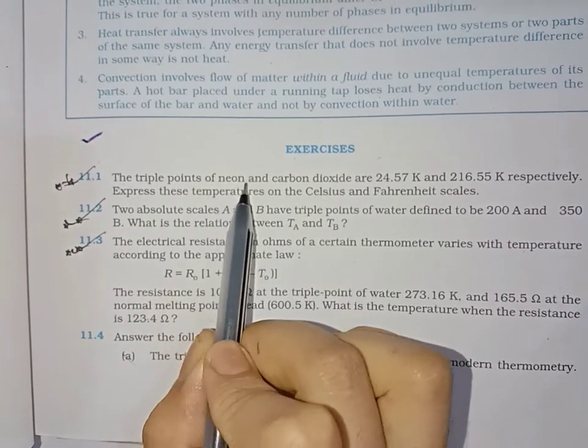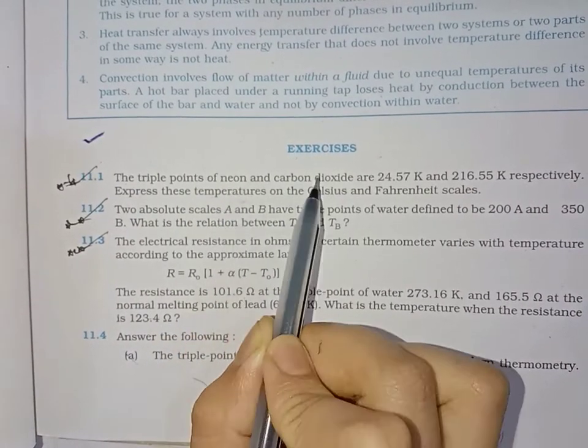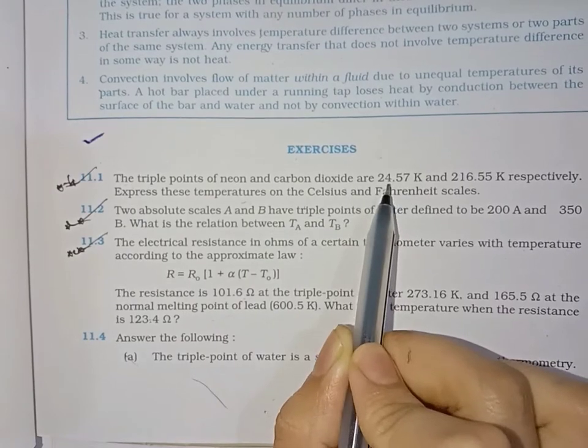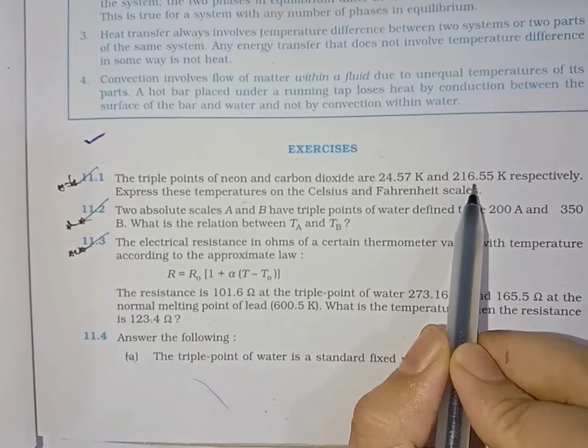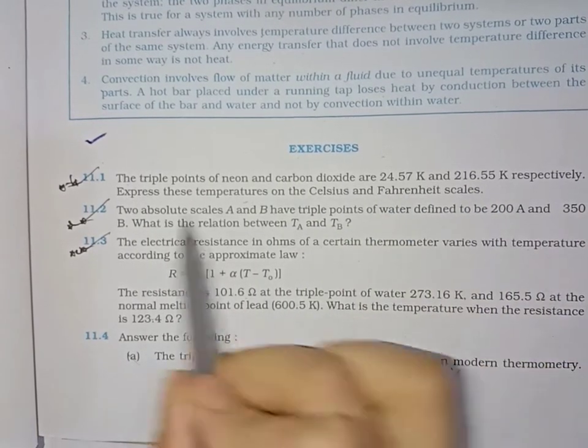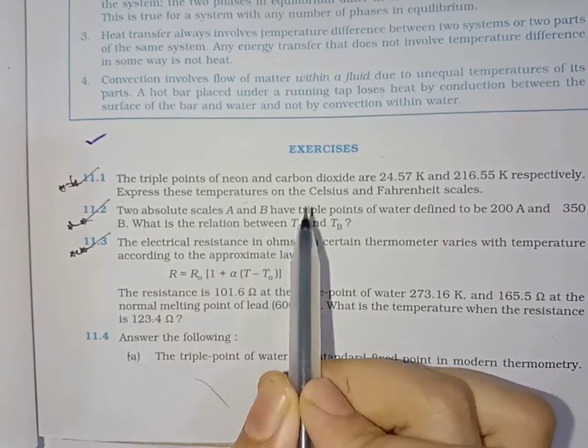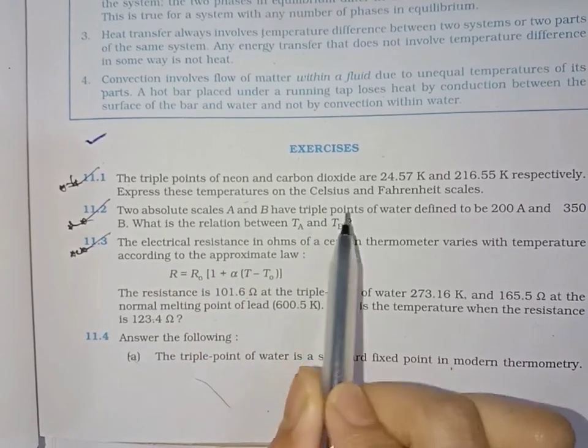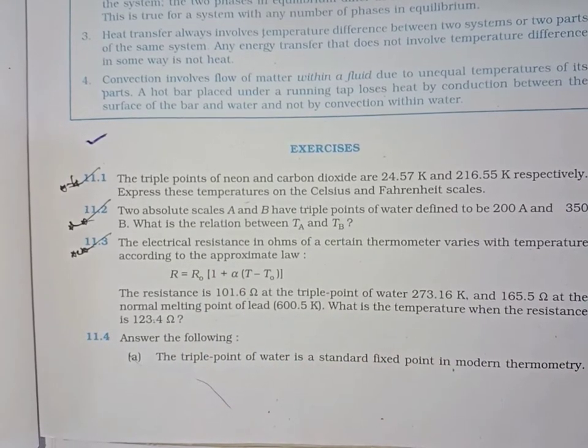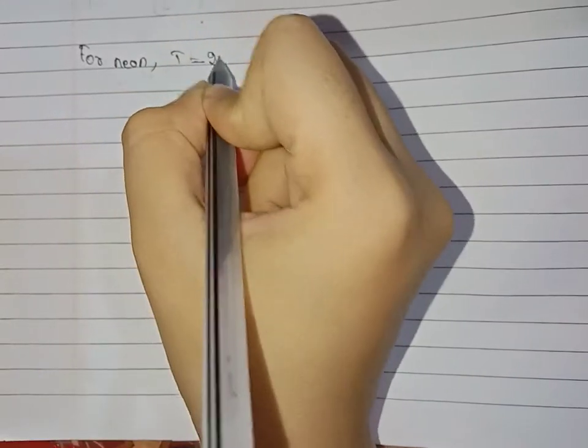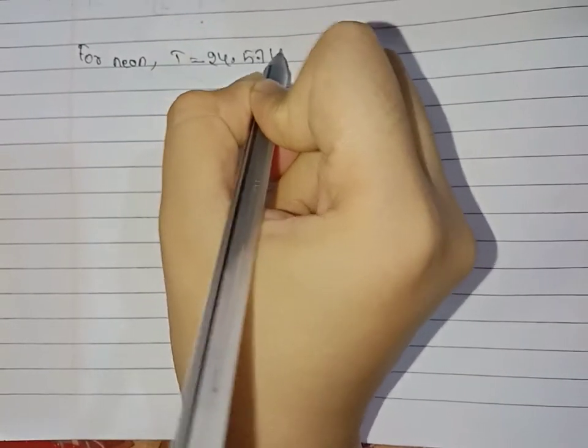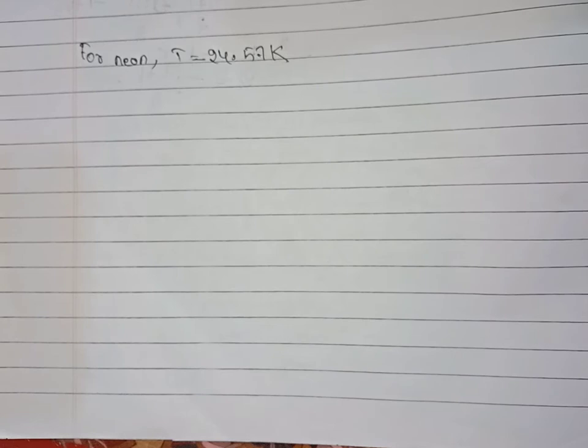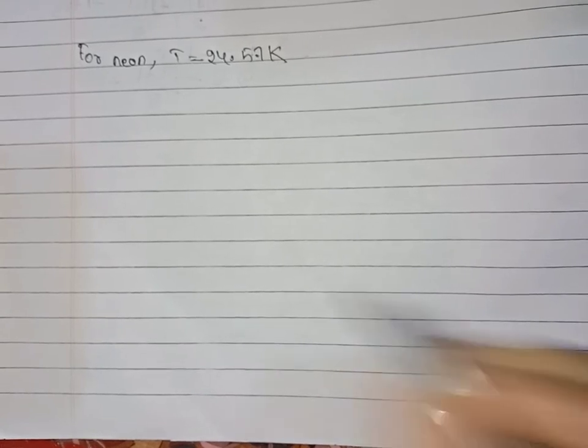The problem asks about the triple points of neon and carbon dioxide. Neon's temperature is 24.57 Kelvin and carbon dioxide is 216.55 Kelvin respectively. We need to find these temperatures in Celsius and Fahrenheit scale. So first, for neon, the temperature is 24.57 Kelvin. We'll apply the formula to convert to Celsius.